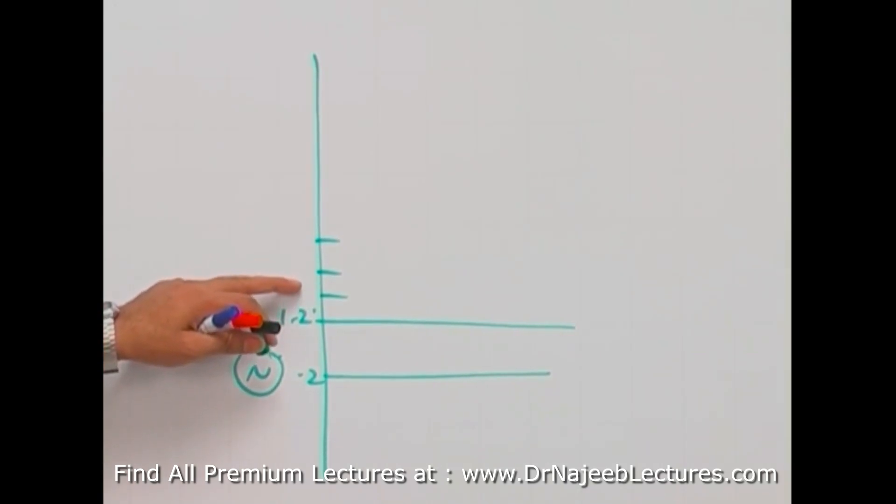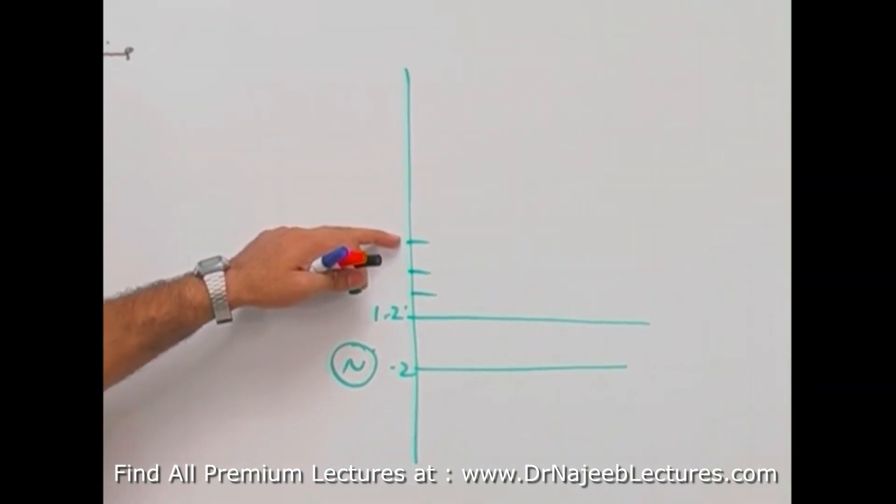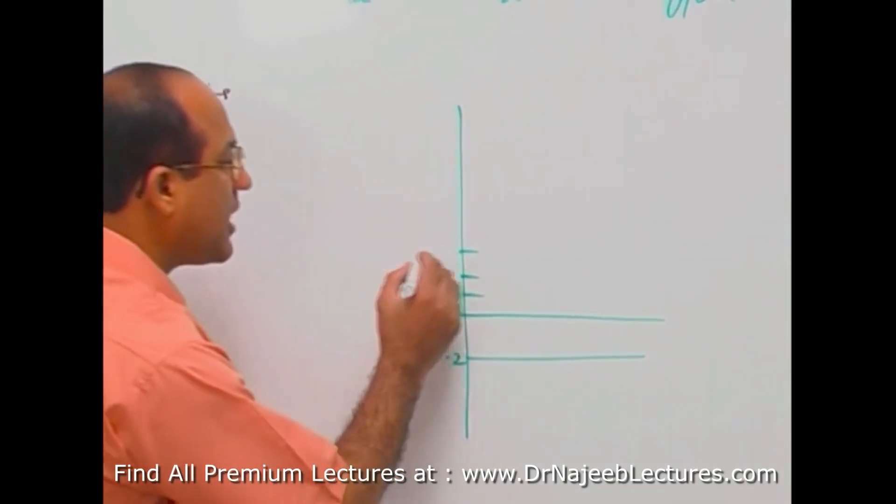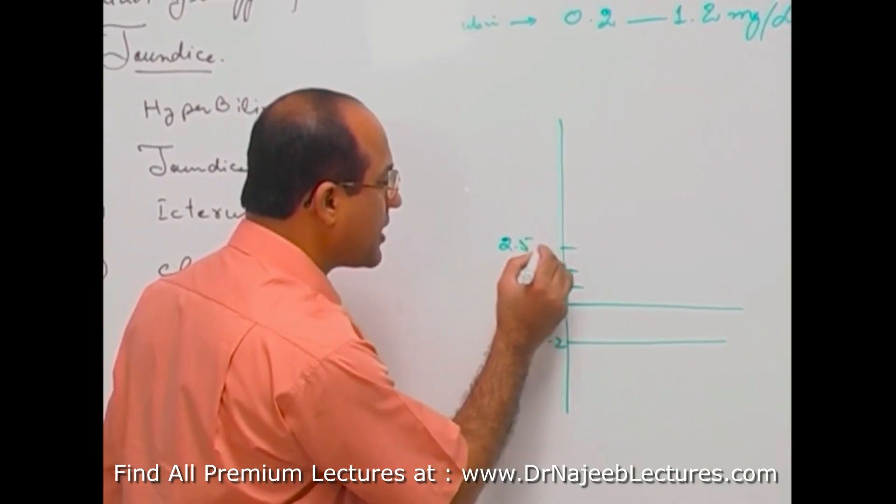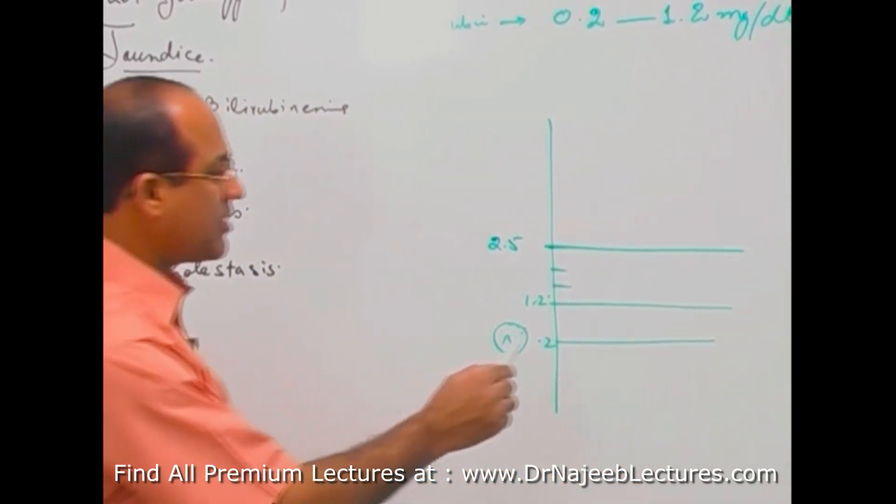significant concentration of bilirubin should be there so that enough yellow coloration of the body tissues occur so that it can be appreciated by the eyes of the examiner. Usually, it happens when bilirubin level is somewhere around 2.5 milligram per dL.